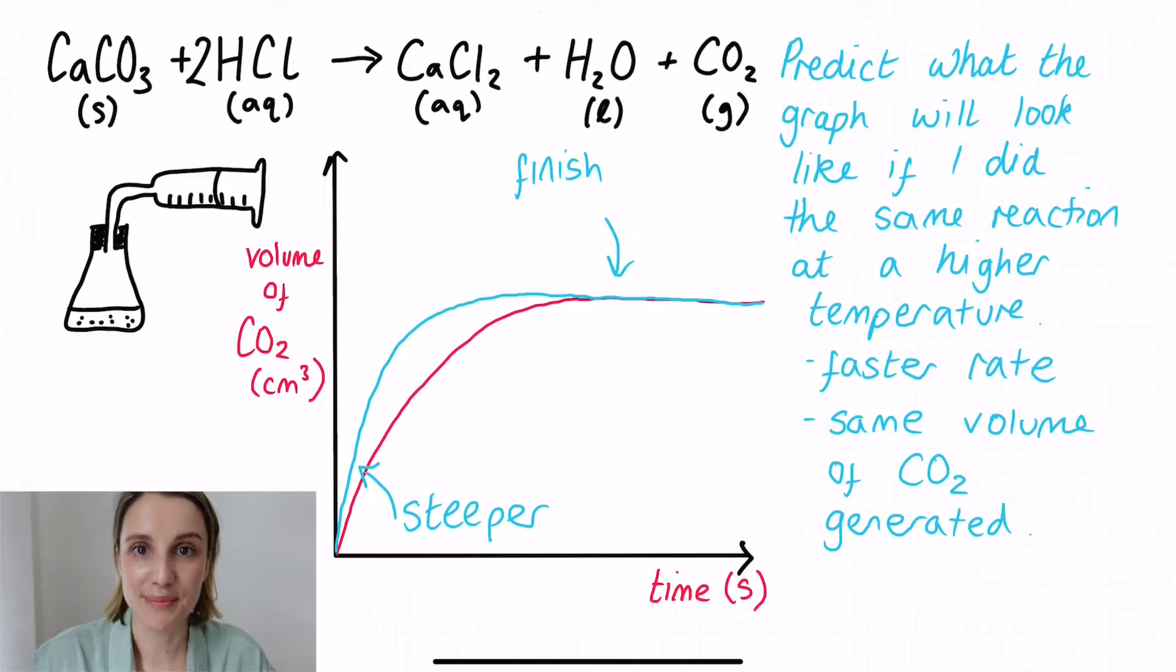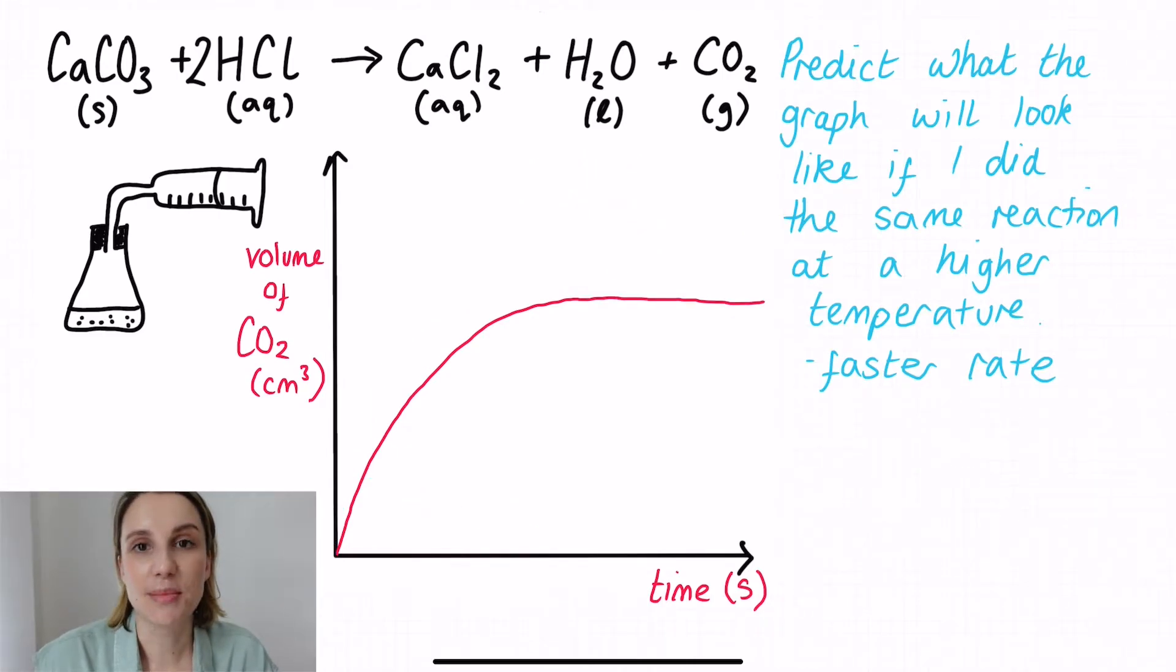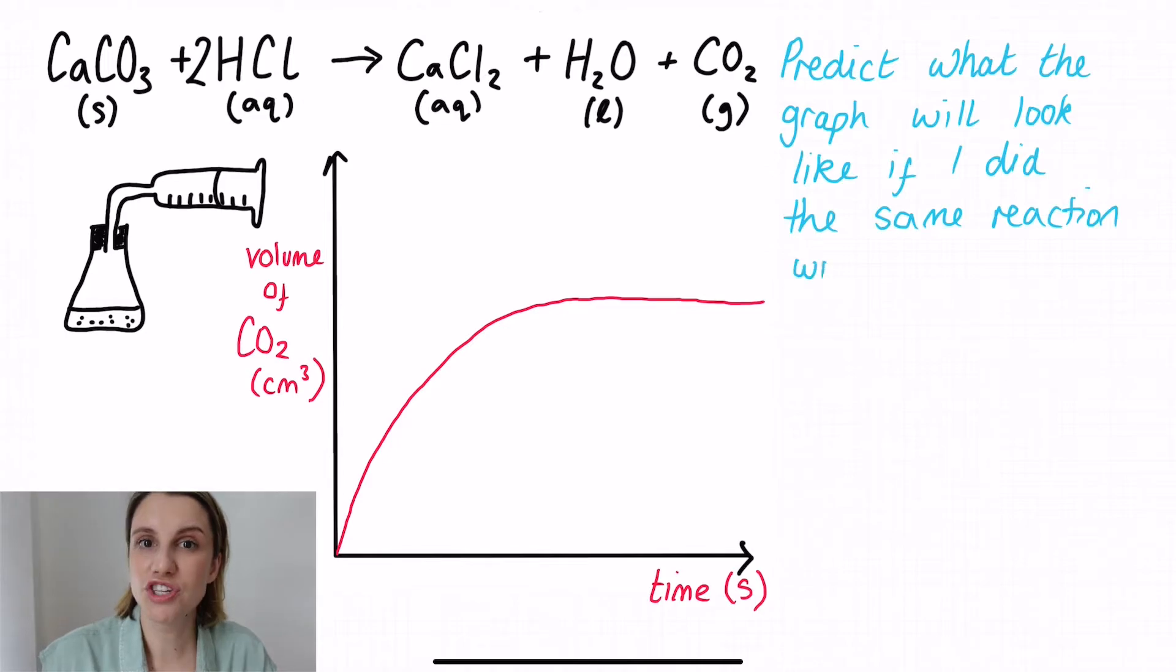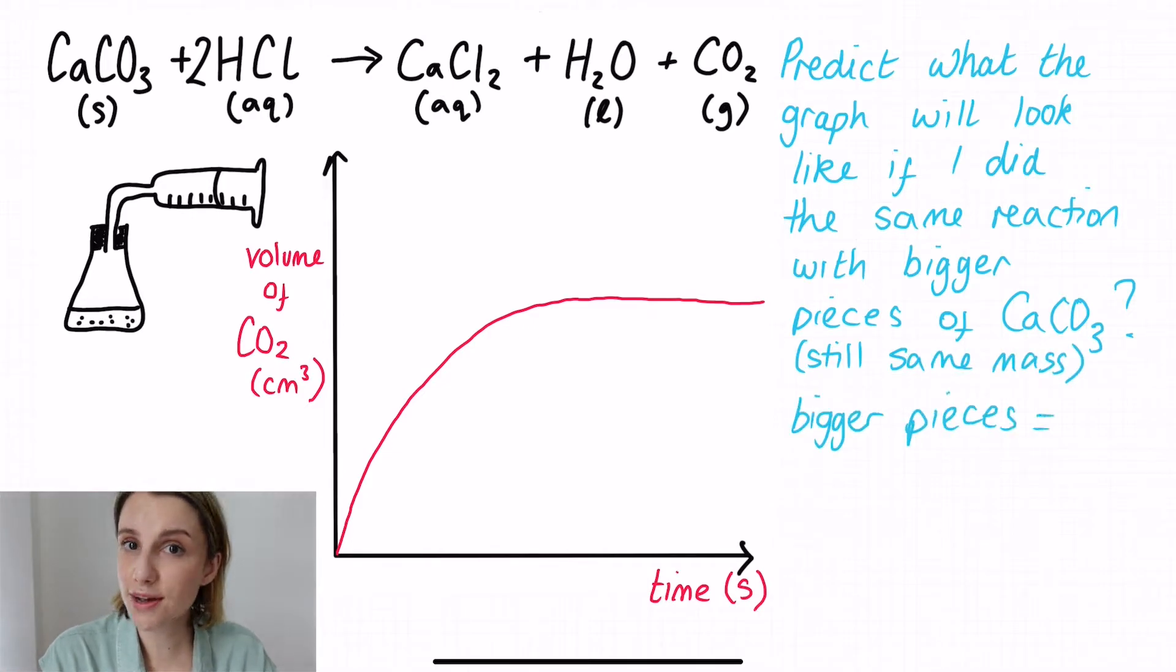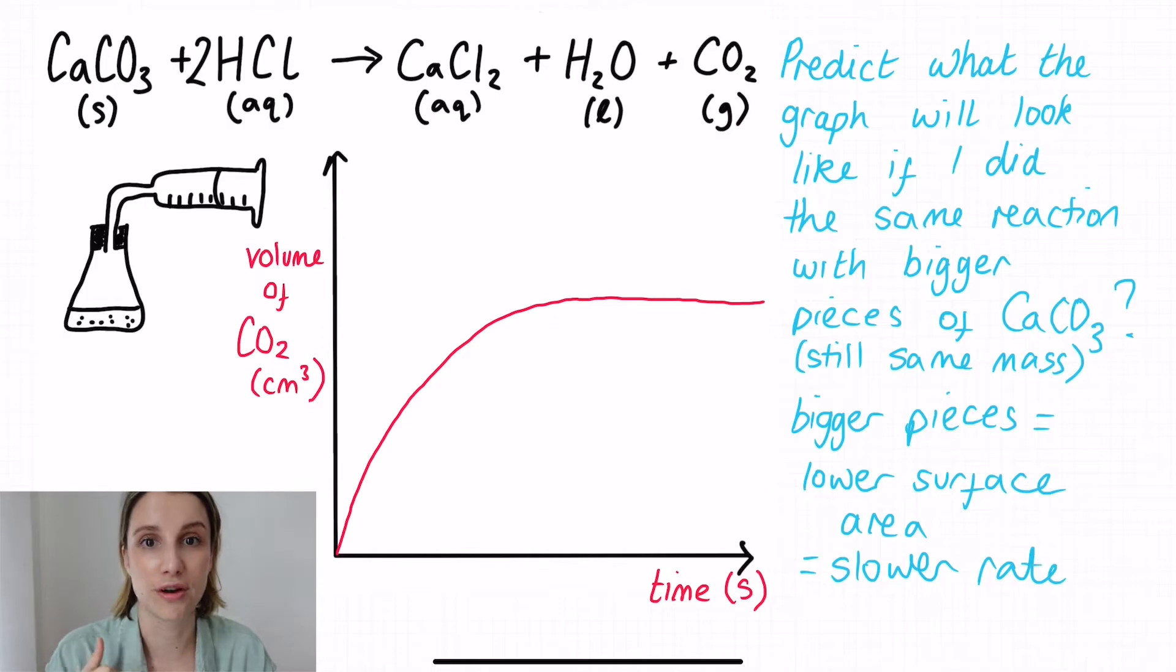Let's mix this up a bit. What happens if I say that I'm going to use bigger pieces of calcium carbonate? We're going to keep the mass of calcium carbonate the same, we're just going to have bigger pieces of the solid itself. So in this case, this means that we have a lower surface area and lower surface area means a slower rate of reaction. So in this case, I'm going to have to draw the gradient of that line a little bit less steep than the original one.